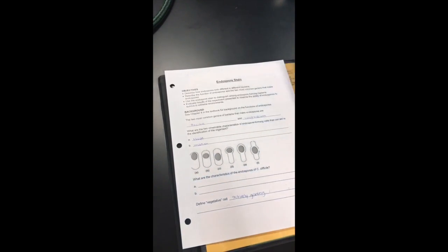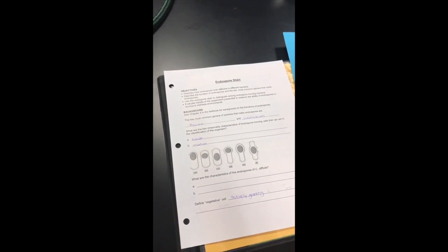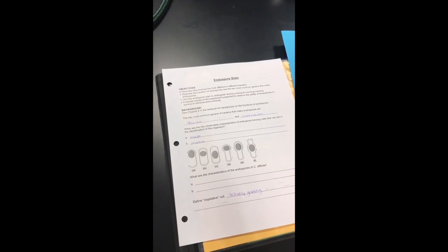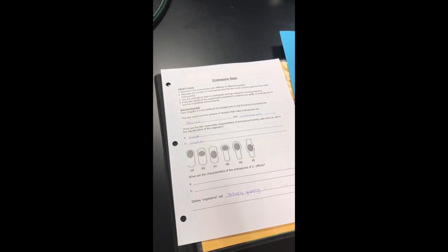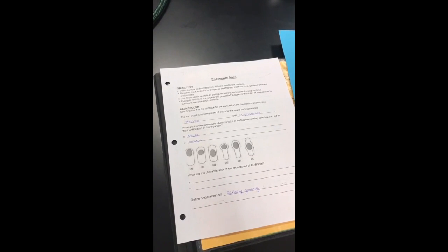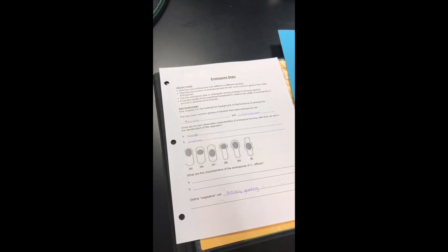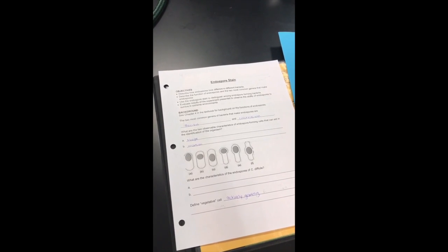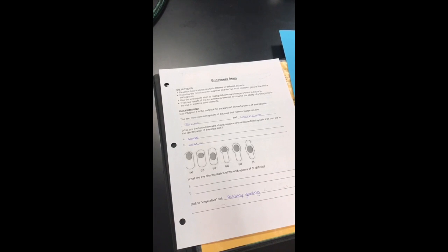The next question asks us about C. difficile. We do not have that organism today, so we're going to skip that question. You'll notice the last question says define a vegetative cell. Well, they're actively growing rather than forming spores. They are red at first, but usually as they die and form endospores, they'll show up green. And that is after an endospore stain.